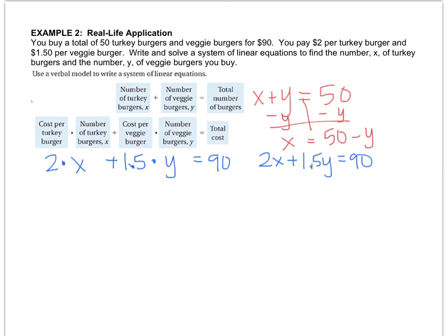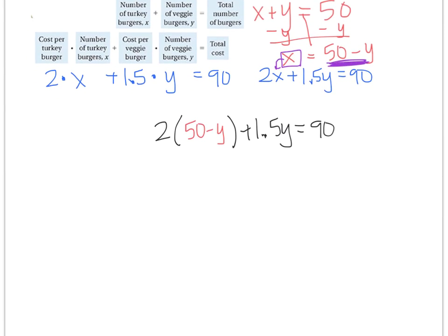So here's what I'm about to do. Wherever I see an x, I will put the expression 50 minus y. So underneath, here's what I'm going to write. I'm going to write 2, and instead of x, I'll put what x is, which is 50 minus y. And then I'll copy the rest of the equation, plus 1.5y equals 90. Step two is to solve the equation, so I'll distribute. I get 100 minus 2y plus 1.5y equals 90. And I'd like you to pause the video and solve for y.